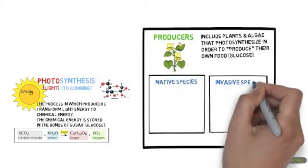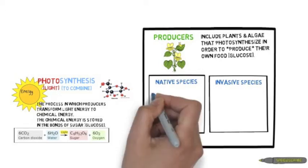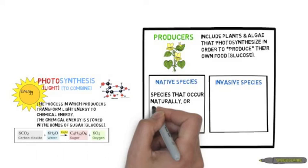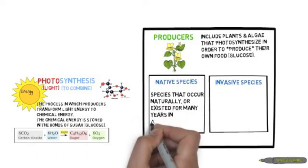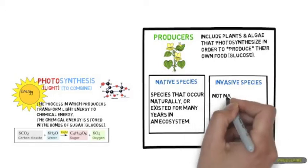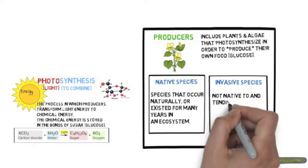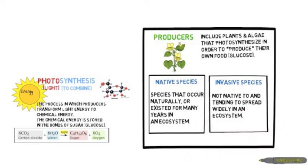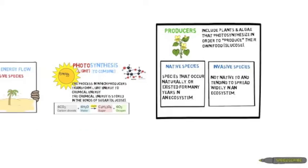Native species are species that occur naturally or have existed for many years in an ecosystem. They are part of a balanced ecosystem. Invasive species, on the other hand, are something that is not needed and tend to spread widely in an ecosystem, easily disrupting the balance.